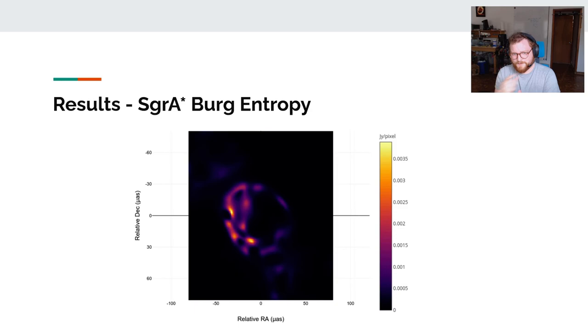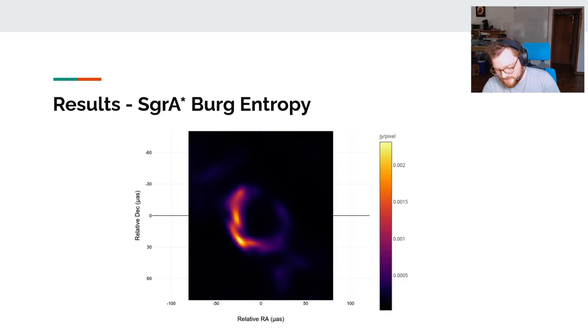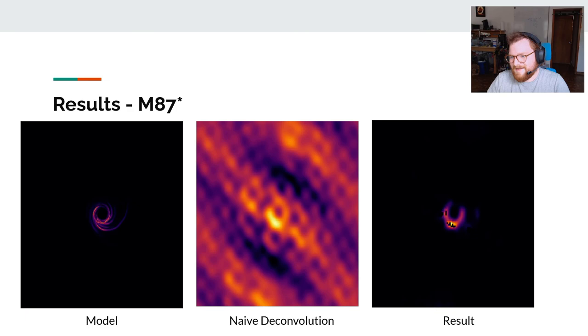It suffers from this vanishing gradient problem, which you can see we actually get the same kind of model of Sag A, and then it evaporates. And it looks cool, but is, you know, not what we want.